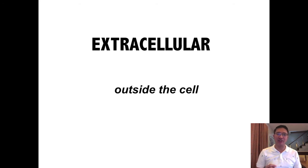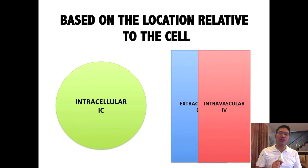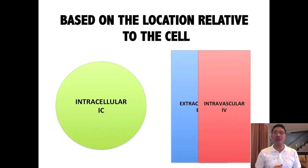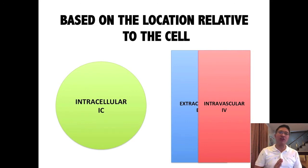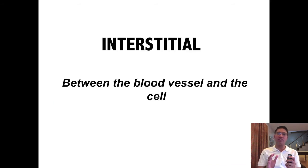The extracellular has two divisions. The first one is what we call inside the blood vessel, and this is intravascular, simply known as IV. Another part of the extracellular compartment is the one between the intravascular and intracellular. That compartment is called interstitial, or IS — the one between the blood vessel and the cell.